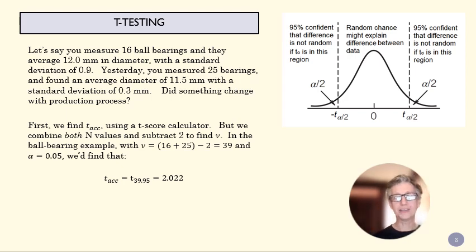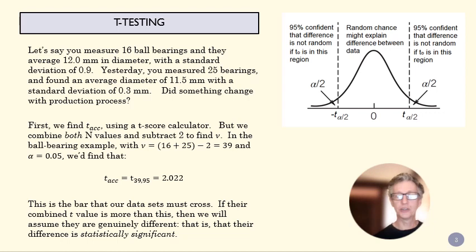So that means if our T-score, the difference between those two data sets, is more than 2.02 standard deviations, then we'll know that those are significantly different, that it's not just a matter of random variation. And what we call that is statistically significant. The difference between these groups would be statistically significant. So let's see if they are.